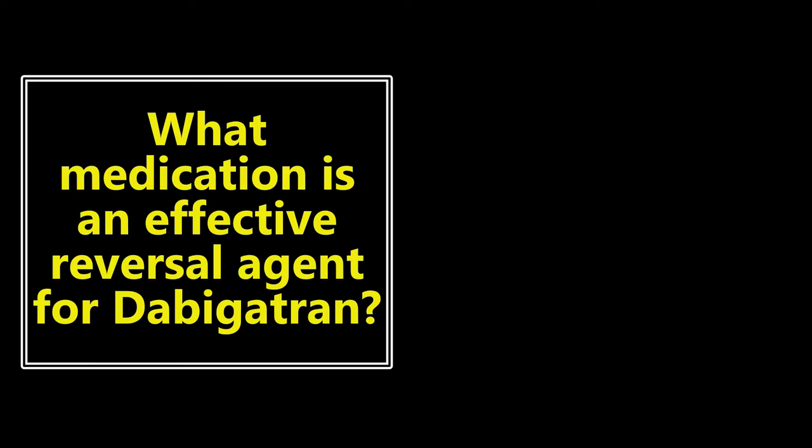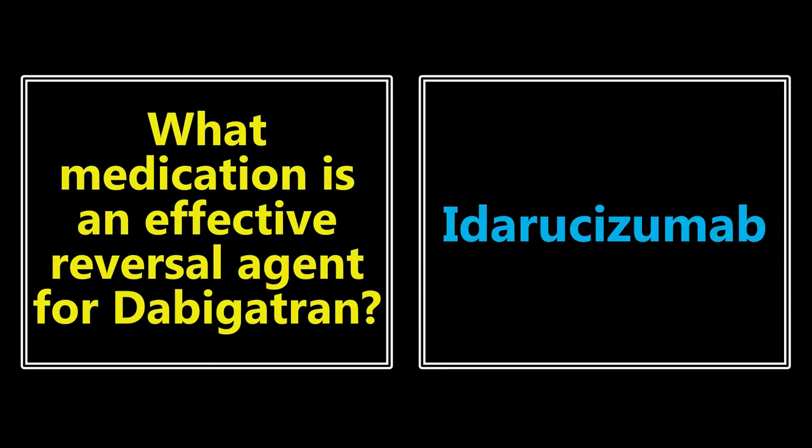What medication is an effective reversal agent for dabigatran? Some of us might know this by the trade name Praxbind, but Praxbind isn't going to be on the exam. You need to know the more difficult name — the monoclonal antibody name — which is idarucizumab. That is the actual name for the reversal agent for dabigatran.